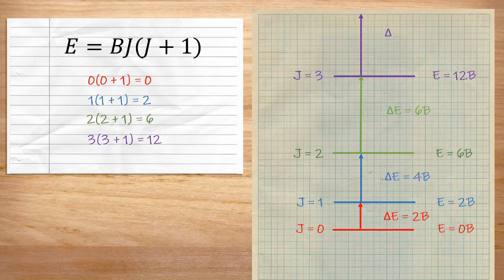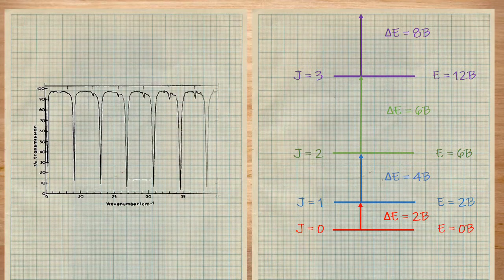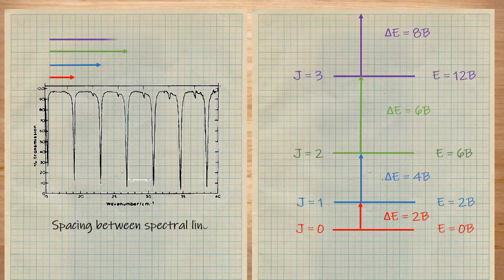Each of these transitions increase by the equivalent of 2b as the rotational quantum number increases. The result is a regular progression in the microwave spectrum where each peak is 2b apart.